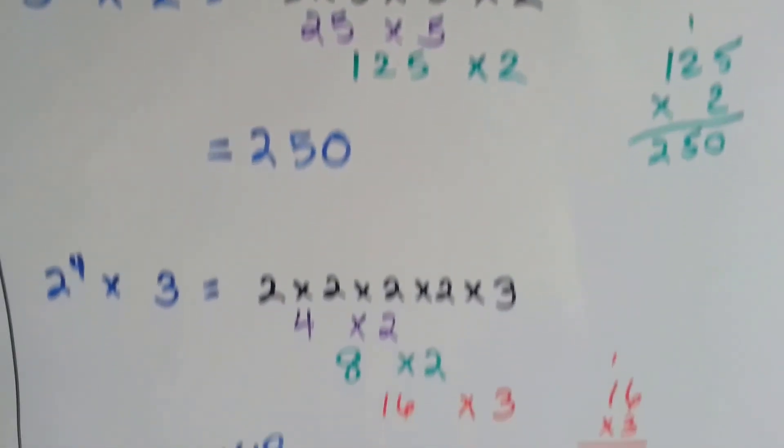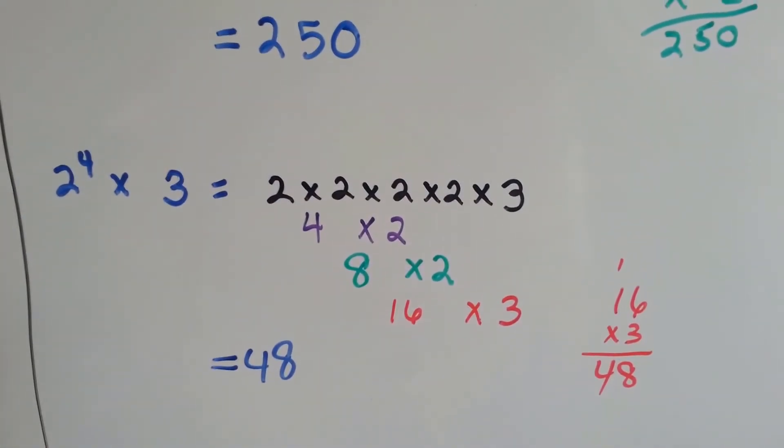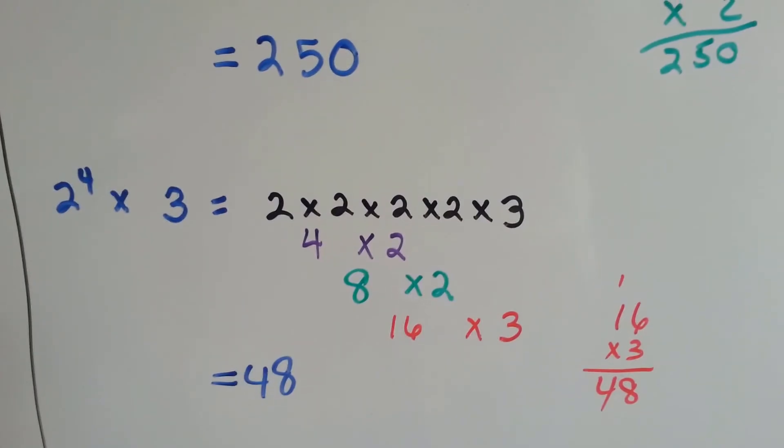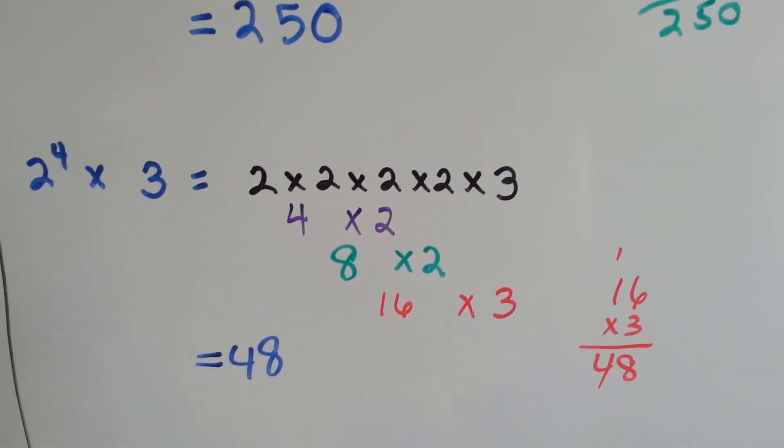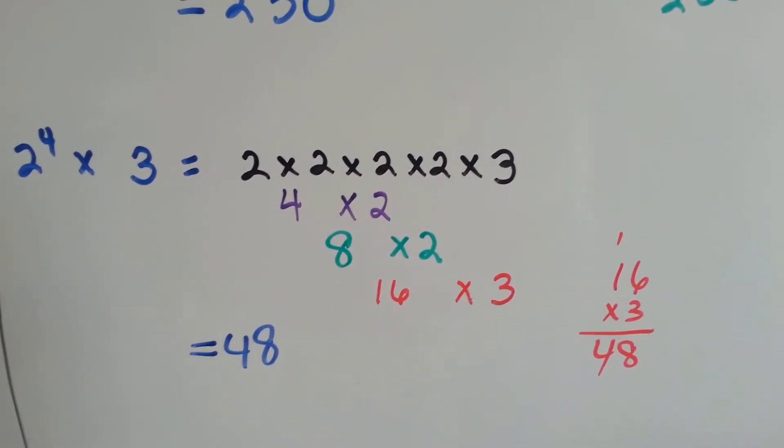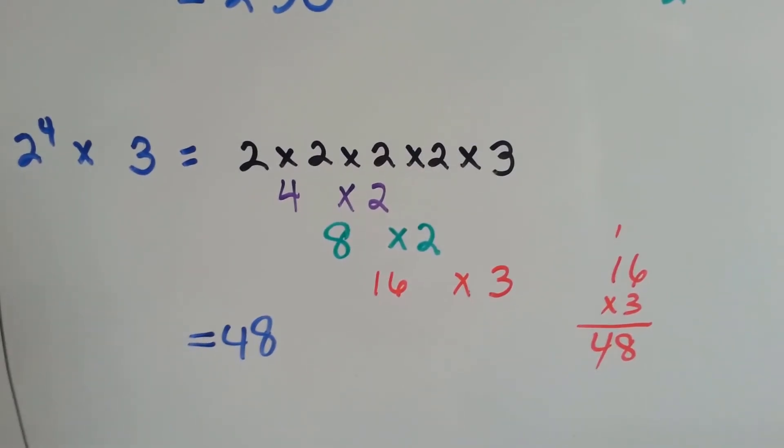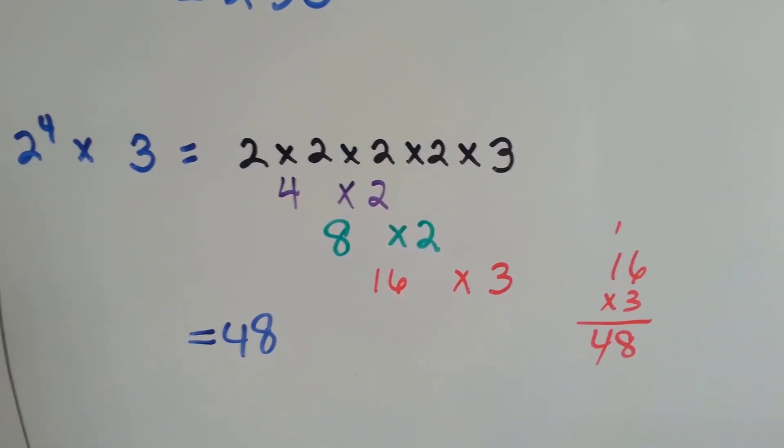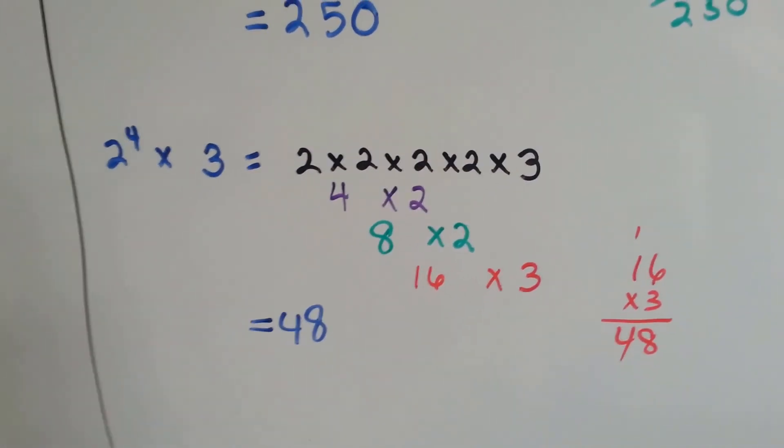Can you follow that? Alright, now we've got 2 to the fourth power times 3, so we need to write the 2 four times, and then multiply that by 3. So 2 times 2 is 4, and then we multiply that by 2 and we get 8, and we multiply that by 2 and we get 16, and now we have to multiply the 16 times 3. And I did that on the side, and I got 48. So 2 to the fourth power times 3 equals 48.